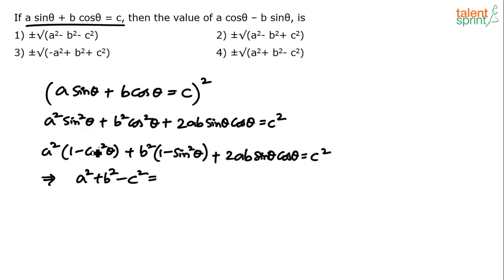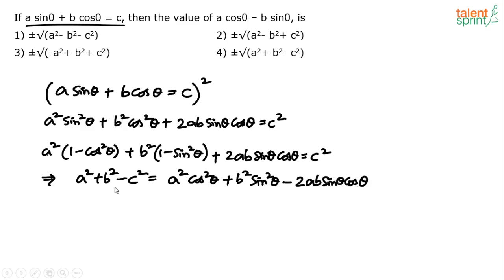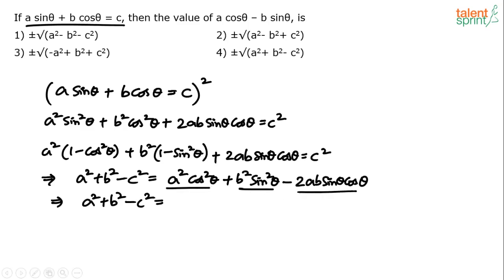Taking the other terms to the right side: a²·cos²θ + b²·sin²θ - 2ab·sinθ·cosθ. Now observe — this is of the form x² + y² - 2xy, where x = a·cosθ and y = b·sinθ. So this equals (a·cosθ - b·sinθ)².